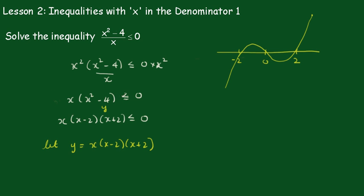Now, y is less than or equal to 0. So y will be negative. So we look at the negative parts of this curve. So the negative parts here will be all along here, negative, and it's going to be negative in here.